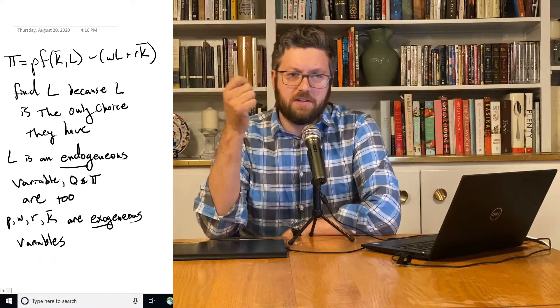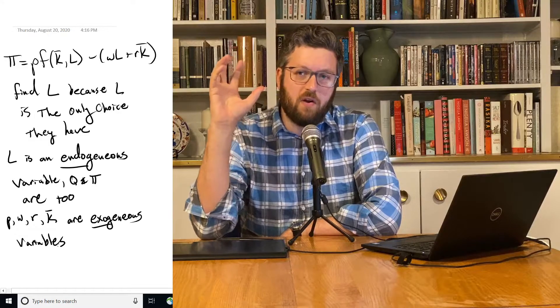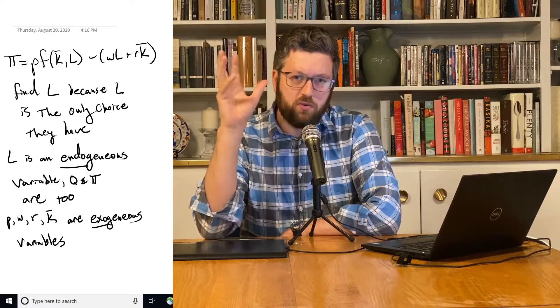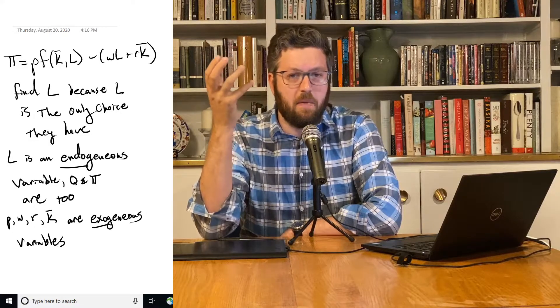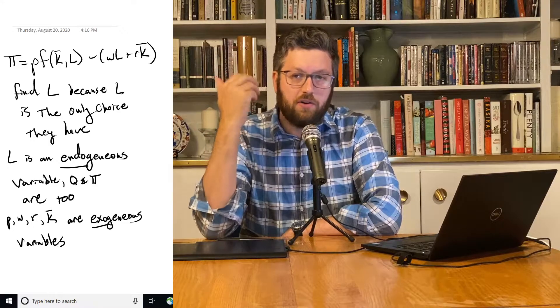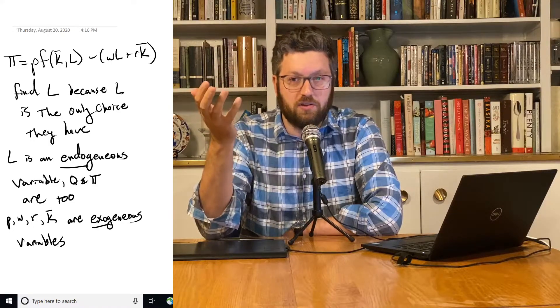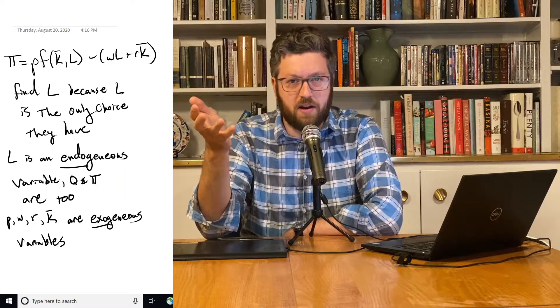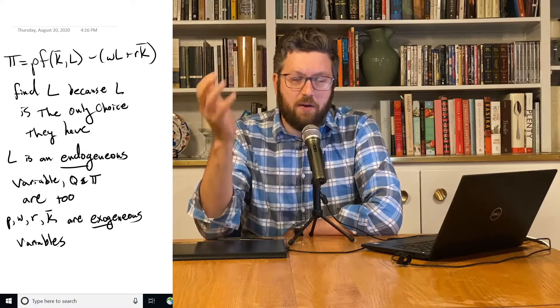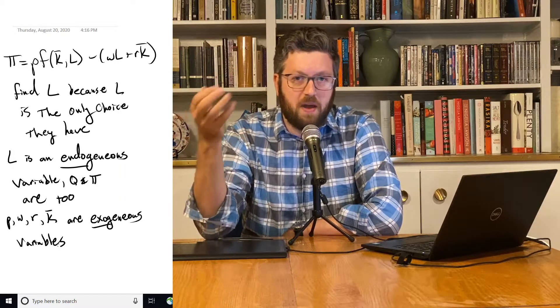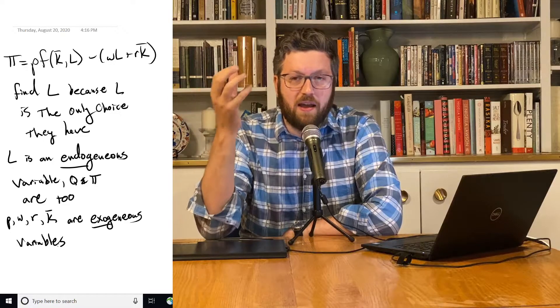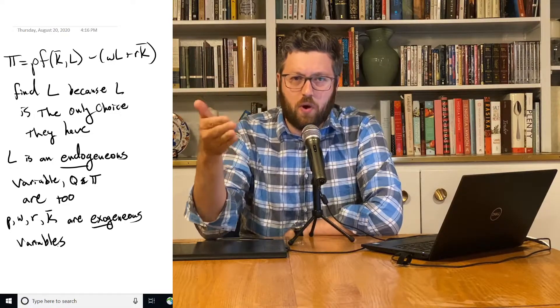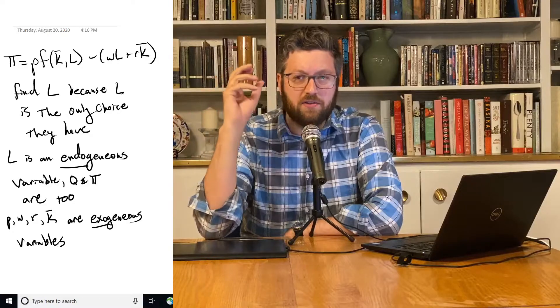Okay? So endogenous variables are variables whose value is determined inside the model we're using to understand a situation. In this case, the situation we're trying to understand is how much labor should a firm make, how much quantity should it supply, how much profit does it get? These are the questions we're trying to answer. And to answer it, we're saying we're going to assume that they maximize profit.